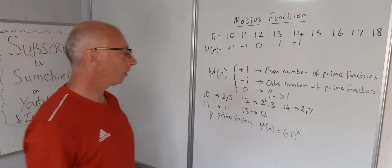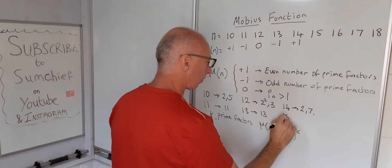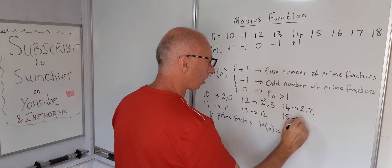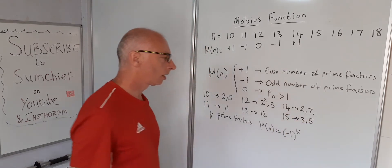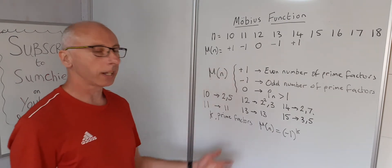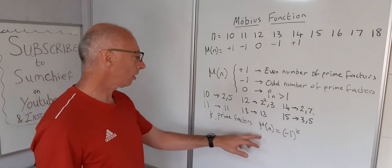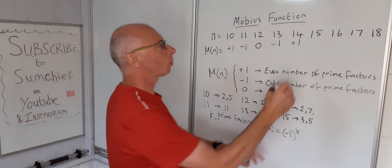15 is made up of 3 and 5, so that's an even number of prime factors, and therefore it's going to be plus 1.